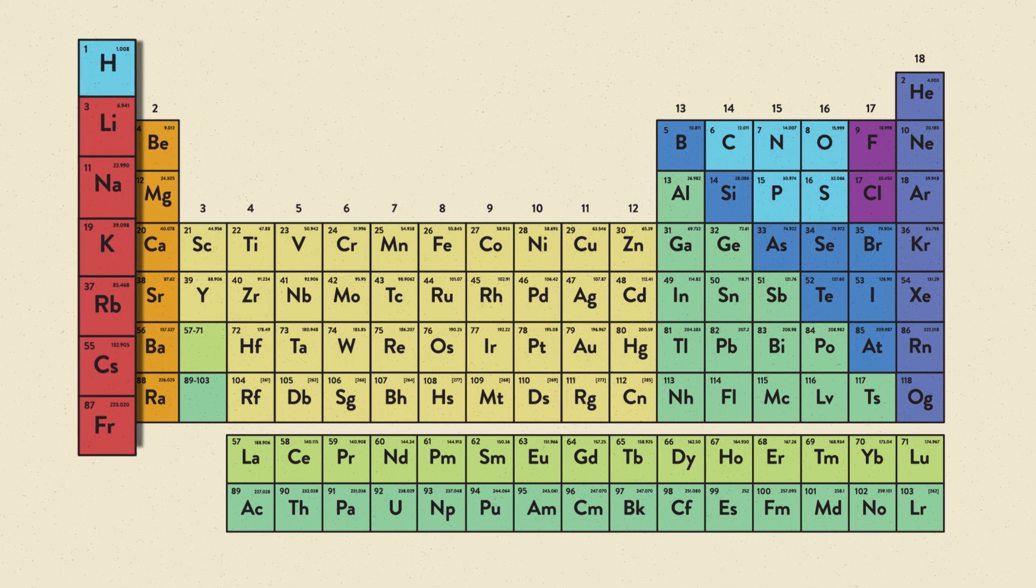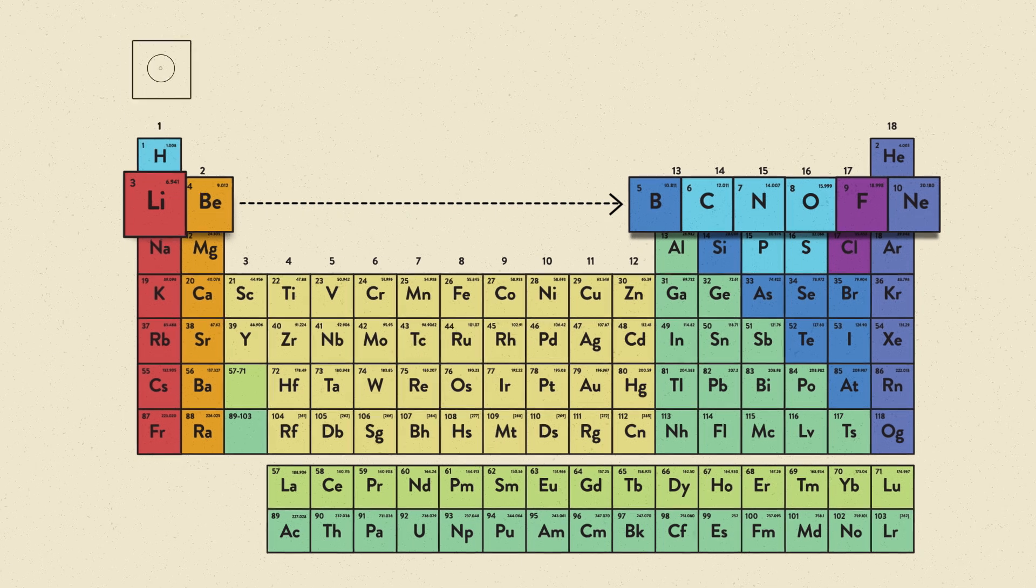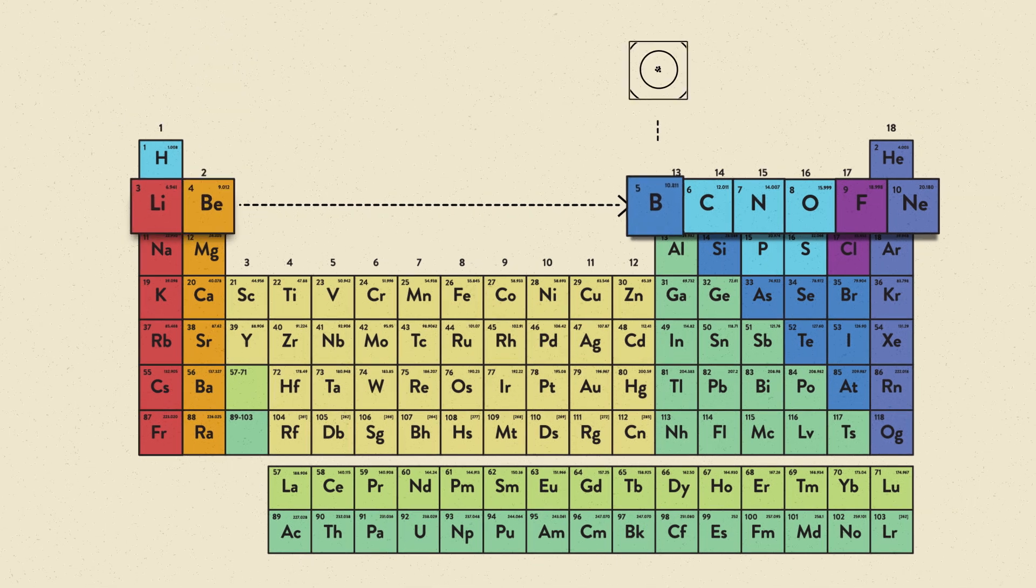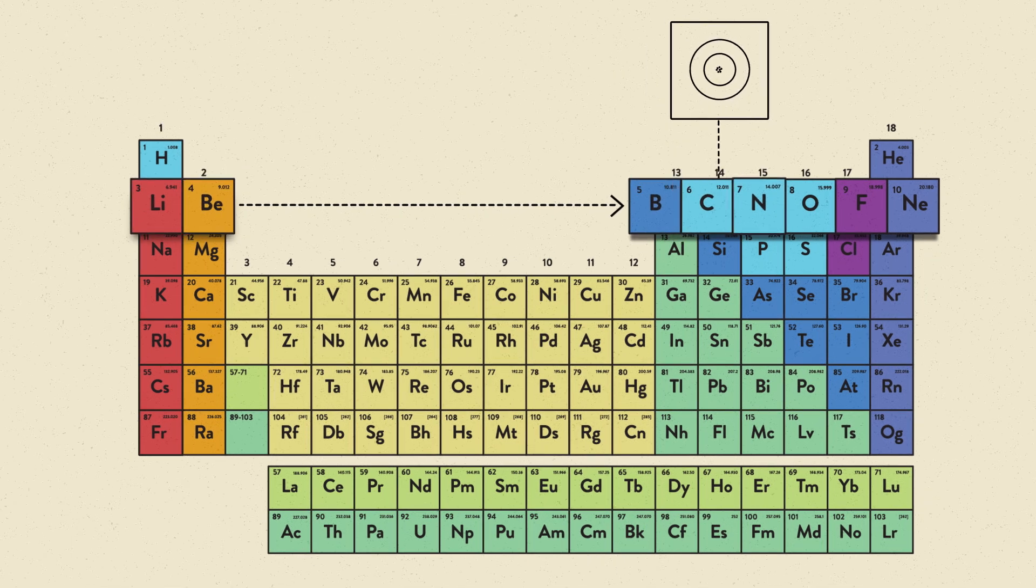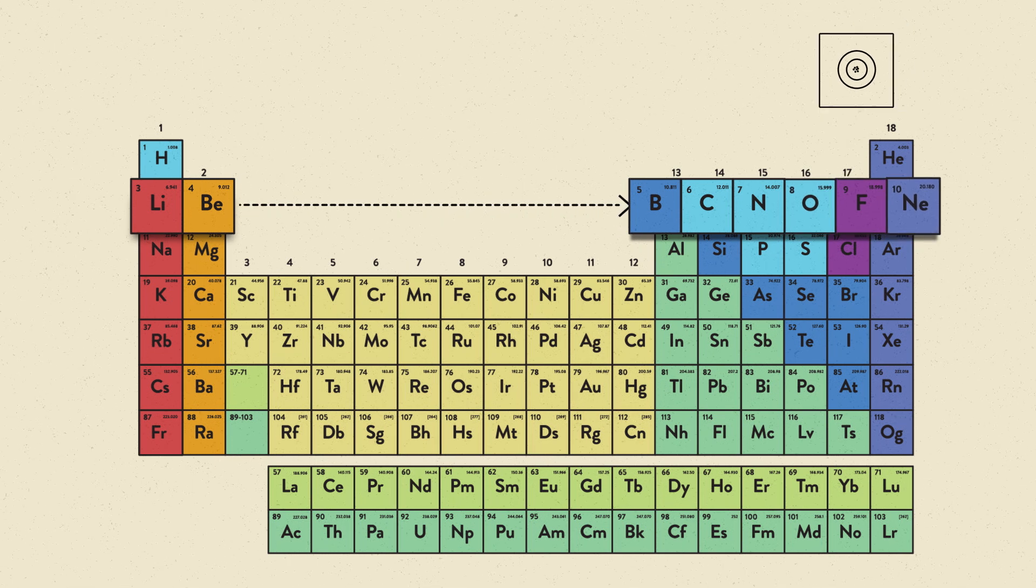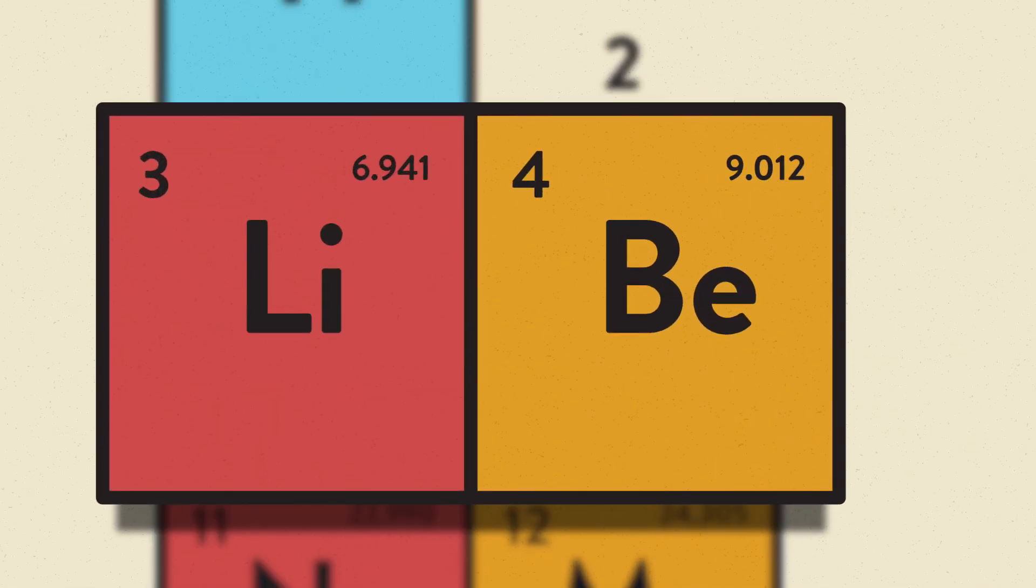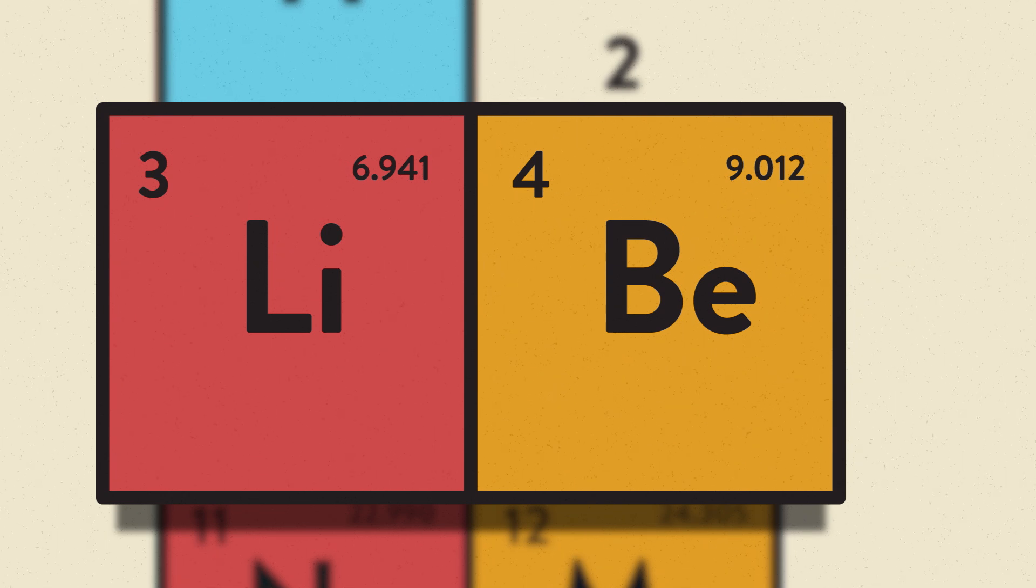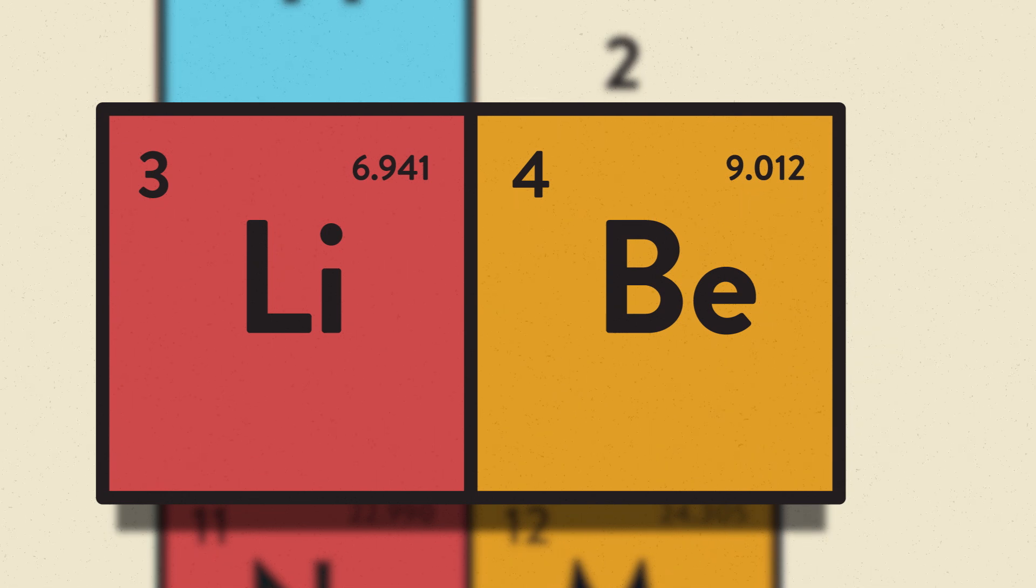Now let's examine trends across periods. As you are traveling across a period from left to right, the atomic radius decreases due to the effective nuclear charge and electron shielding. We're going to compare lithium and beryllium to gain a better understanding of how these processes affect atomic radius.